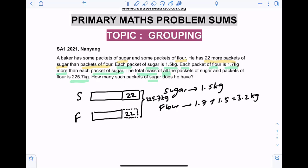Of course, when we add another 22 packets of flour, the total mass must increase. Increase by how much? Let's see: 22 times 3.2. 22 times 3.2, that will give us 70.4 kilograms additional mass.